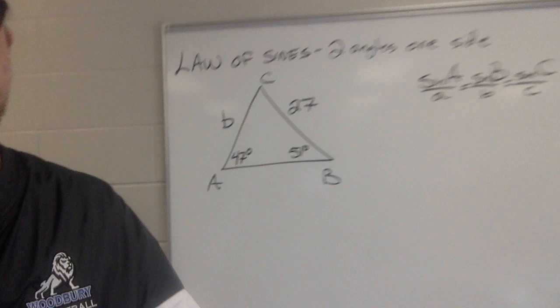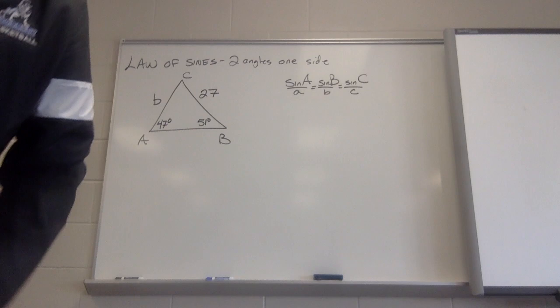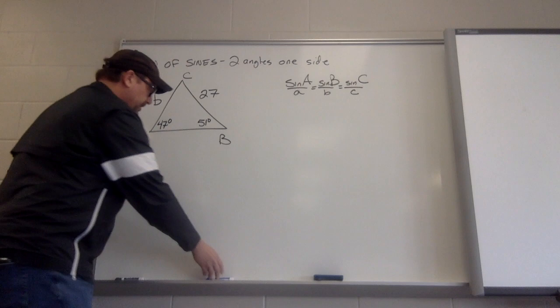Let's see. You pick the one that you know two parts of. I know both parts of a, so I write sine of 47 over little a, which is straight across from it.